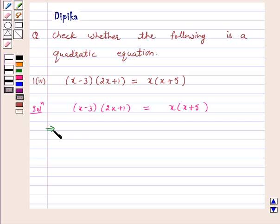On multiplying the left hand side, we get 2x² + x - 6x - 3 = x² + 5x.